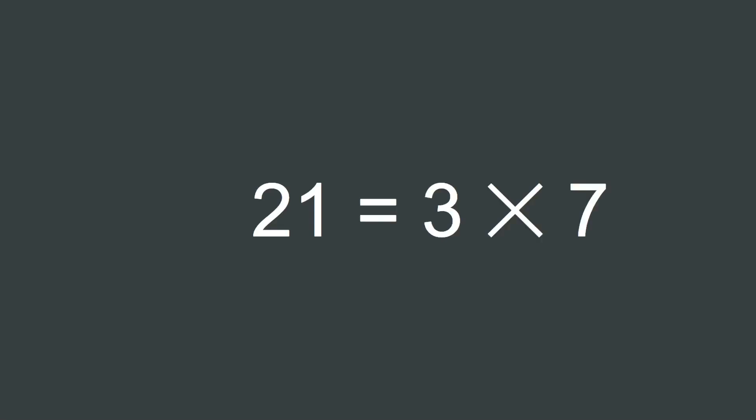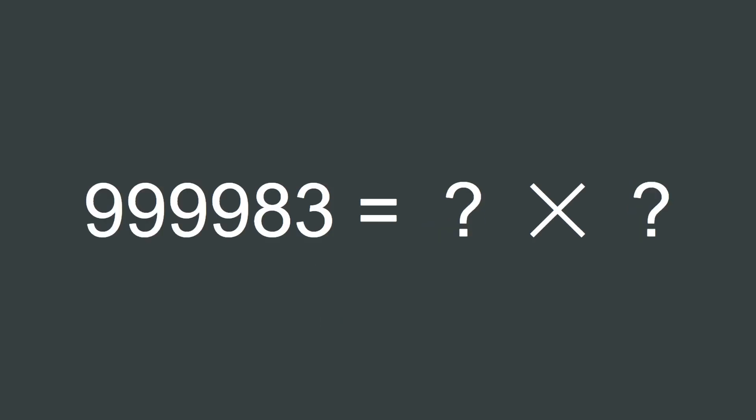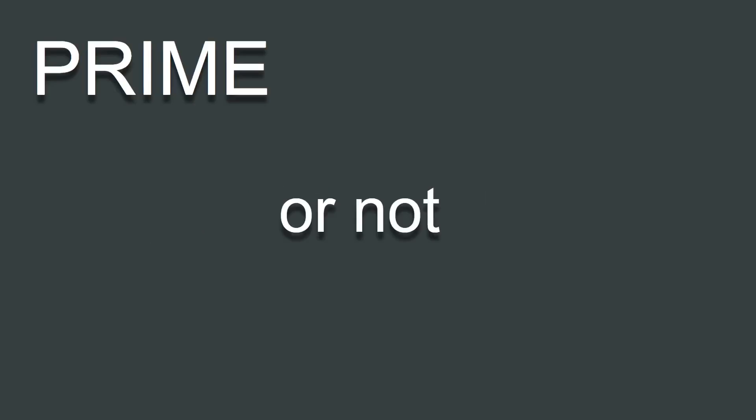Some numbers can be written as the product of two others, but some can't. Numbers of the first type we call composite, while numbers of the second we call prime. The riddle we'll begin to tackle today is, how can we tell which is which? Or, to riff on Shakespeare for a moment, prime or not prime? That is the question.